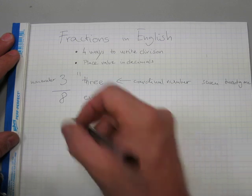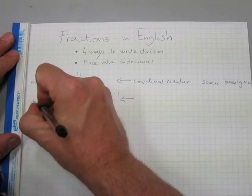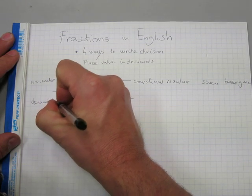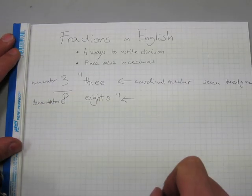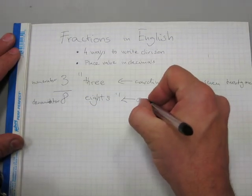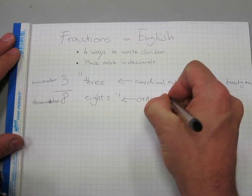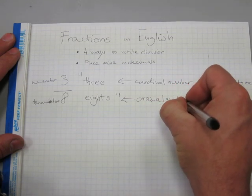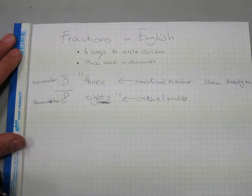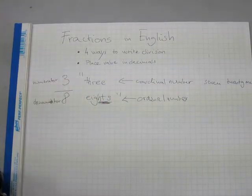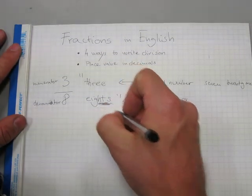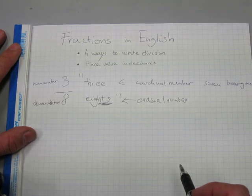On the bottom here, for the denominator — we say 'eighths,' and 'eighths' is an ordinal number. It's in a plural form and it's got a 'th' in it.